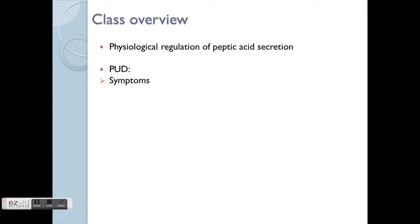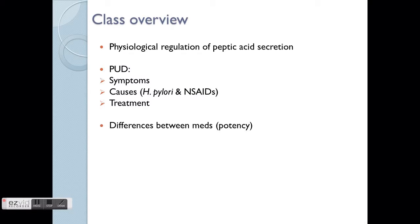Regarding PUD, you need to know briefly about the symptoms and the causes. There are two main causes: H. pylori and prolonged NSAID usage. Another part is the treatment, and also the differences between medications, especially focusing on potency and some special issues. These will be covered in Parts B and C. The more clinical aspects of the overall management of the disease will be covered in Class 2.